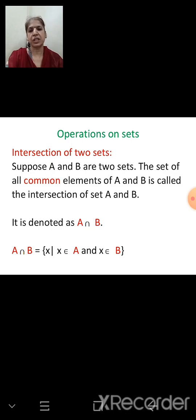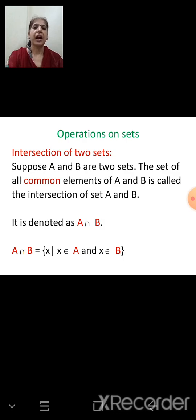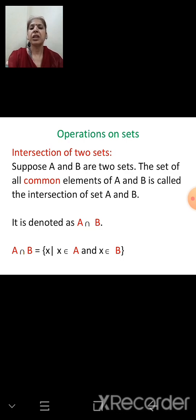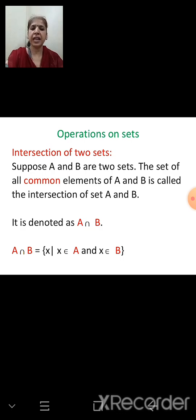First, intersection of two sets. As the name indicates, intersection means common elements — like when two lines intersect, there is one and only one point in common. If A and B are two given sets, the set of all common elements of A and B is called the intersection of sets A and B, written as A ∩ B. In set builder form: A ∩ B = {X | X ∈ A and X ∈ B}.